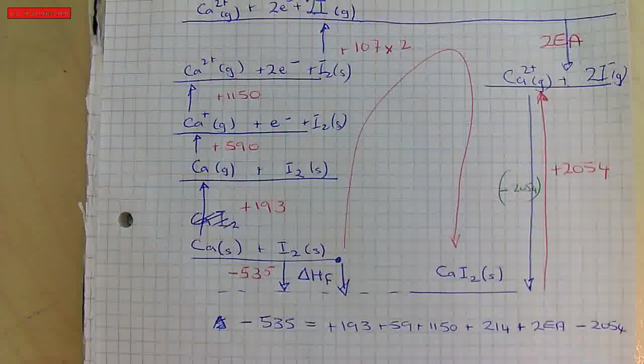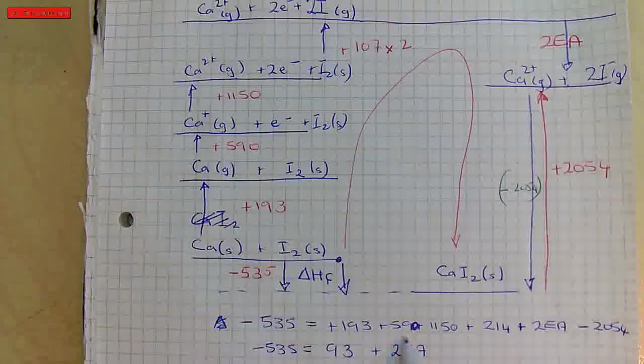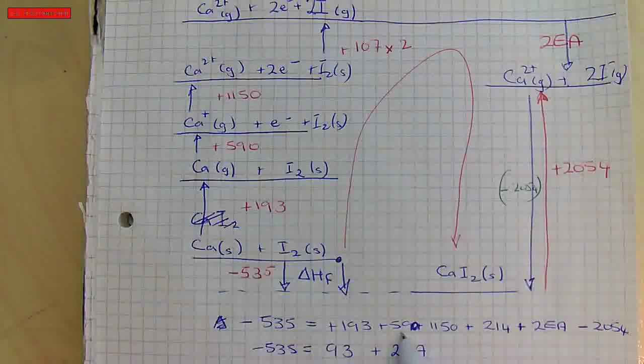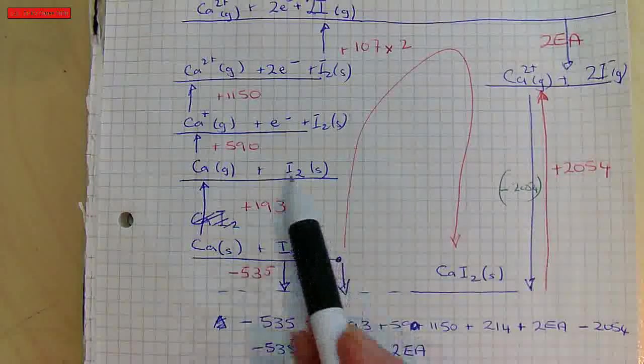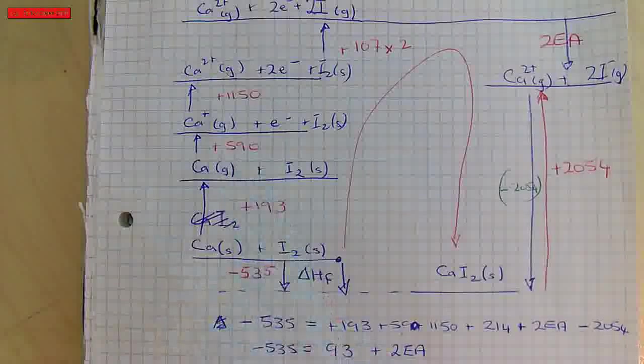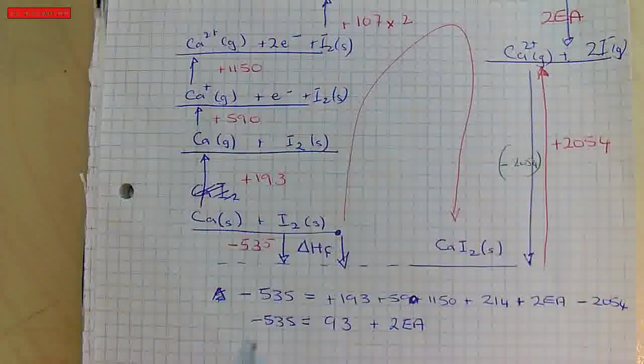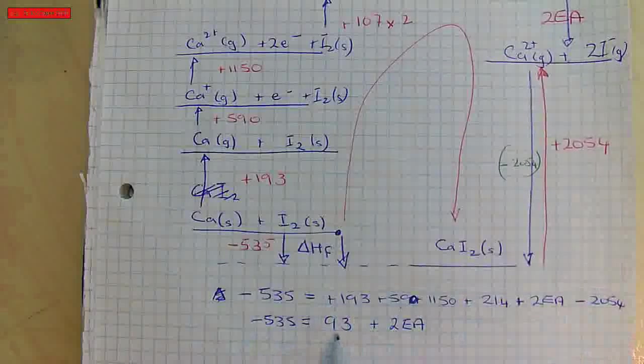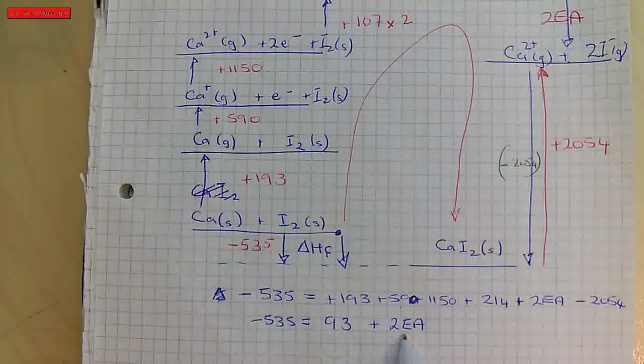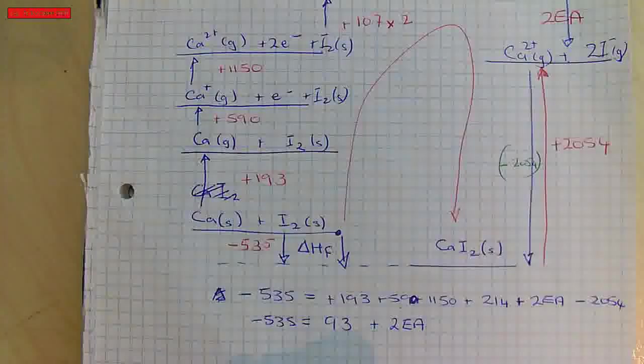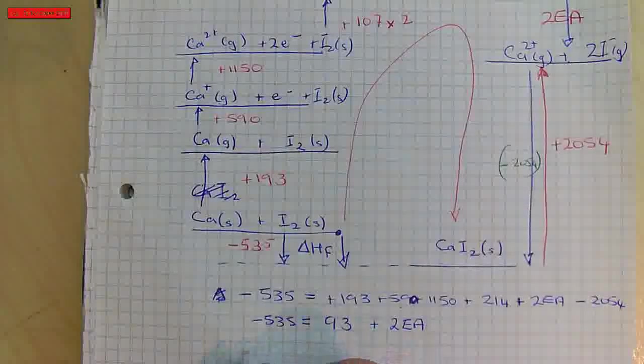I'm just going to simplify this side of the equation and we'll work out what 2Ea is. Okay, so I noticed that I'd made a mistake here. I'd just put 59 and this is actually 590 so it's this value here. Okay, so what I can see is I've simplified this maths here and I've got 93 and 2 electron affinities.